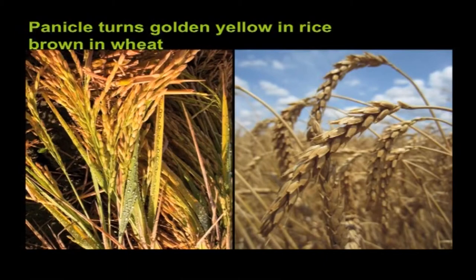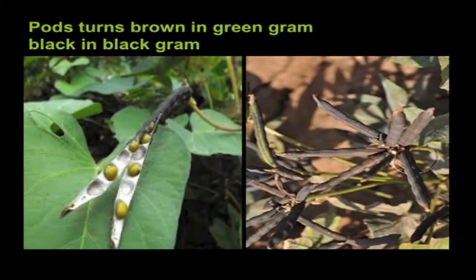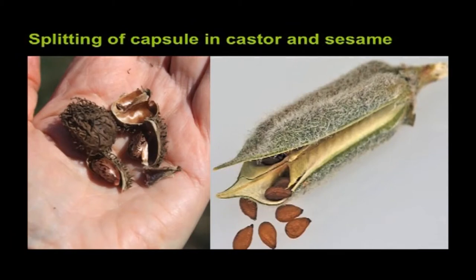Harvest maturity is indicated when 70 percent of the panicle turns golden yellow in rice, and brown in wheat. In case of pearl millet and sorghum, the peduncle or panicle stalk dries. In case of legumes — for example, green gram — the pod turns brown; black in black gram; golden brown in soybean; brown in cowpea; and red in red gram. While in castor the capsule splits, similarly in sesame also, at this stage the crop is harvested with little loss in seed vigor.